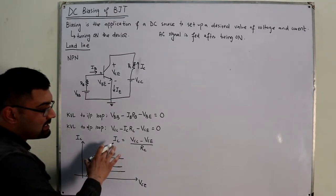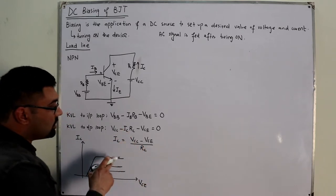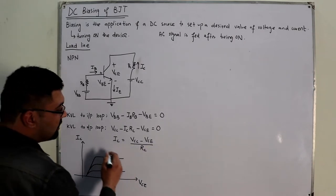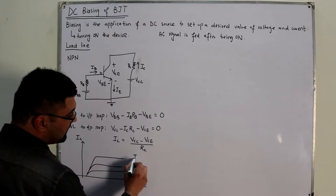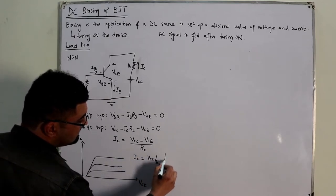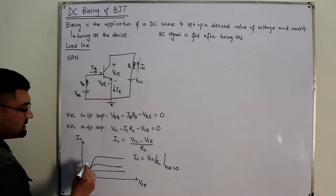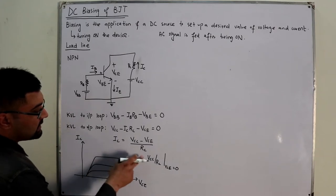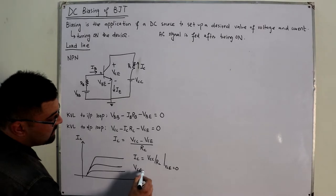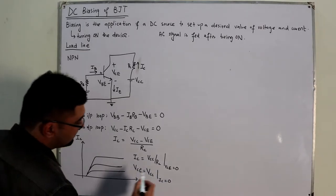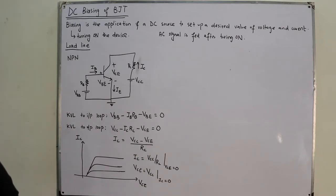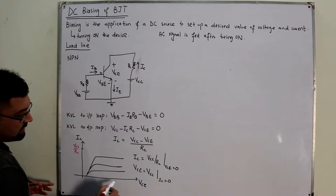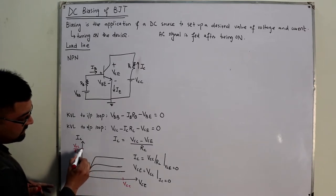To draw the load line we need two intercepts. When V_CE = 0: I_C = V_CC / R_C (y-intercept). When I_C = 0: V_CE = V_CC (x-intercept). Plot these two points — one at (0, V_CC/R_C) and the other at (V_CC, 0) — and join them to get the DC load line on the output characteristics graph.